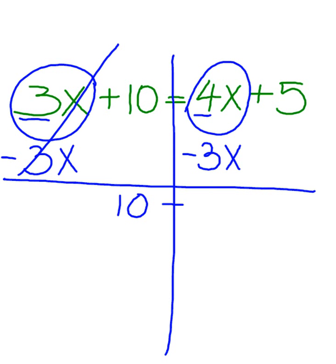Positive 10 equals 4x minus 3x is 1x, and I bring down the positive 5. 1x is simply x, so I will replace it. I have 10 equals x plus 5.